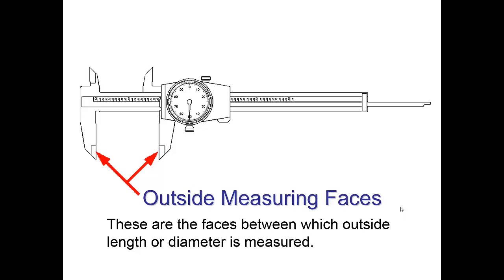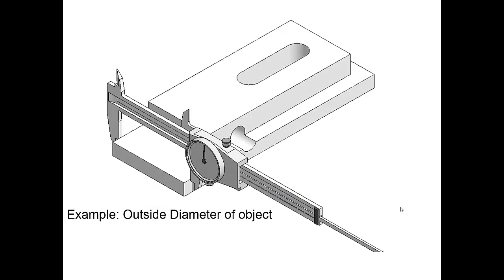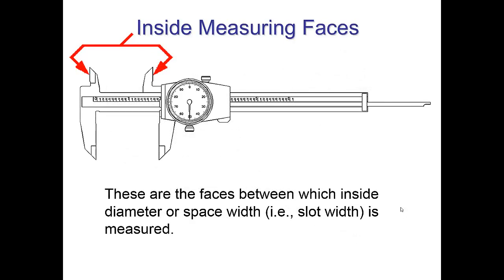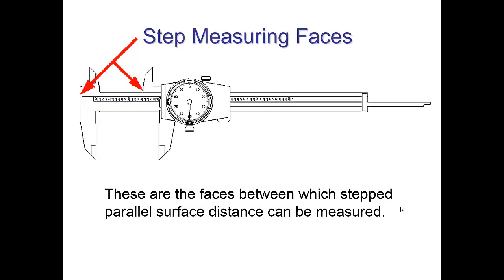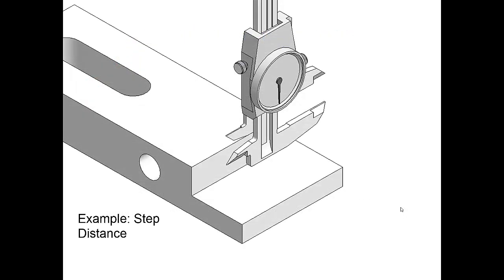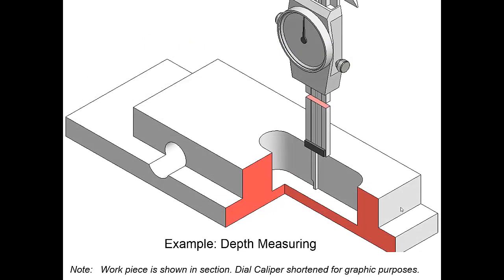Outside measuring faces is the most common use for these things and it's how we're going to measure our blocks. There's a nice isometric view for you. Inside measuring faces, very useful for measuring diameters of holes like so. Step measuring faces lets you measure the distance between two steps or two surfaces that are separated from each other just like that. And finally hole depth just like that.